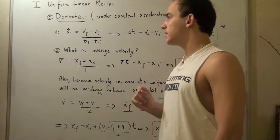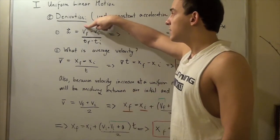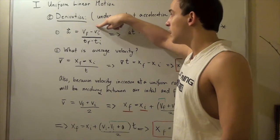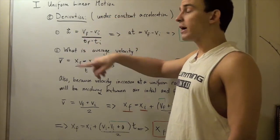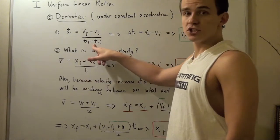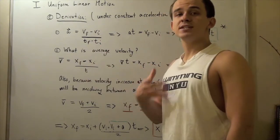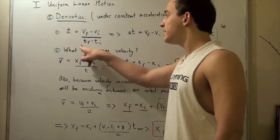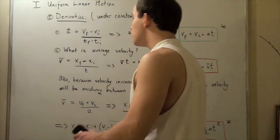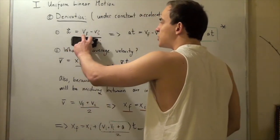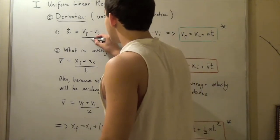We can define acceleration as our final velocity minus our initial velocity, divided by t final minus t initial. In our problems, t initial is simply zero, so t final minus zero is simply t final. We represent our change in time as simply the elapsed time, t.